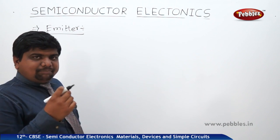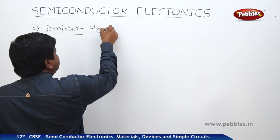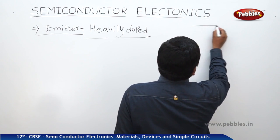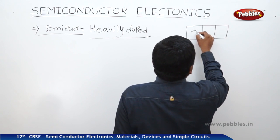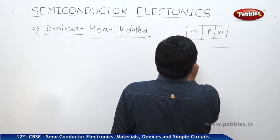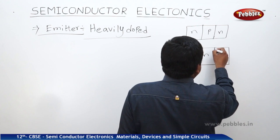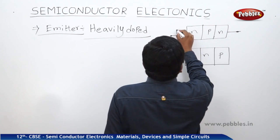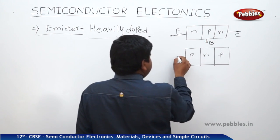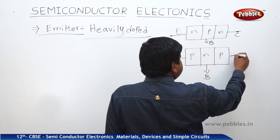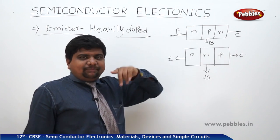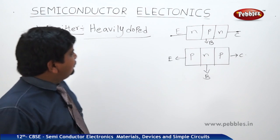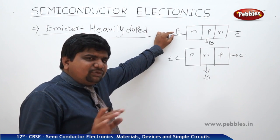The emitter is the part of the transistor that is heavily doped. In an NPN transistor, the emitter is made of N-type semiconductor, the base is made of P-type semiconductor, and the collector is again made of N-type semiconductor. Being heavily doped means the emitter can accept any amount of input voltage.